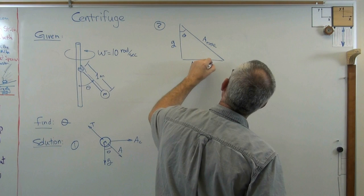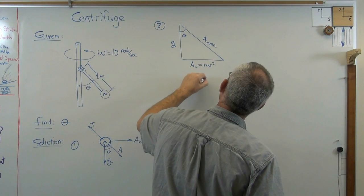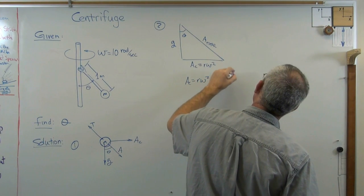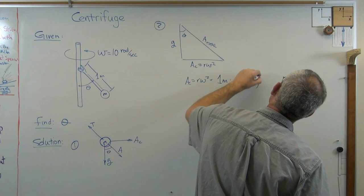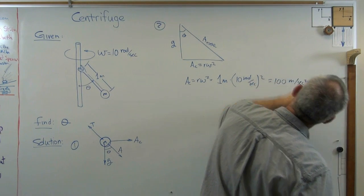And AC is r omega squared. Well, AC equals r omega squared. Let's see. R is 1 meter times omega squared. Well, that's 10 radians per second squared. And that's going to give me 100 meters per second squared.